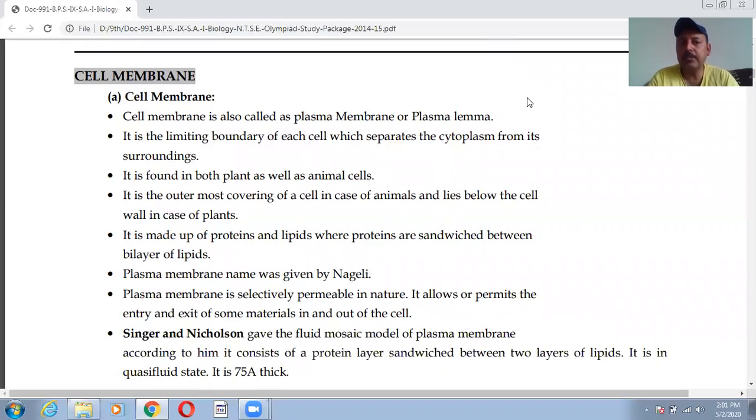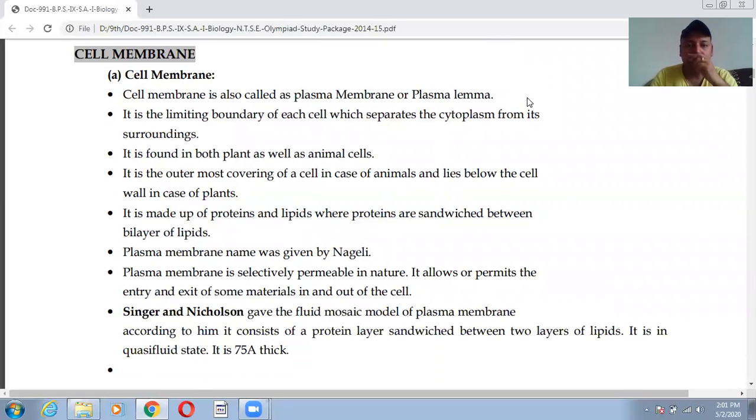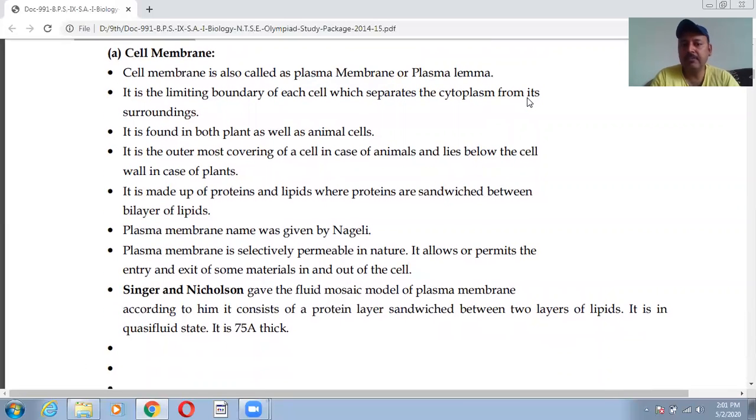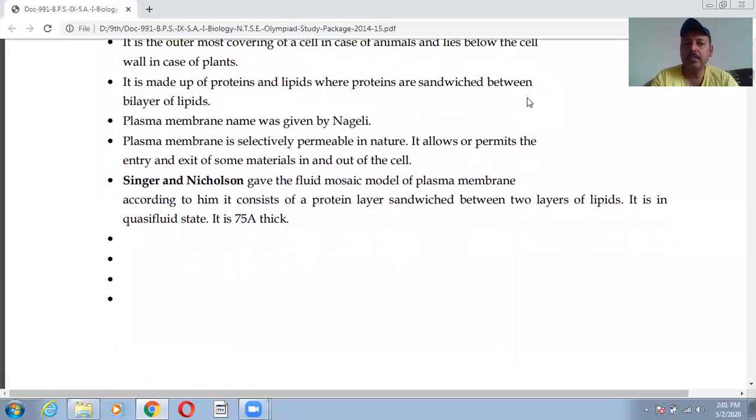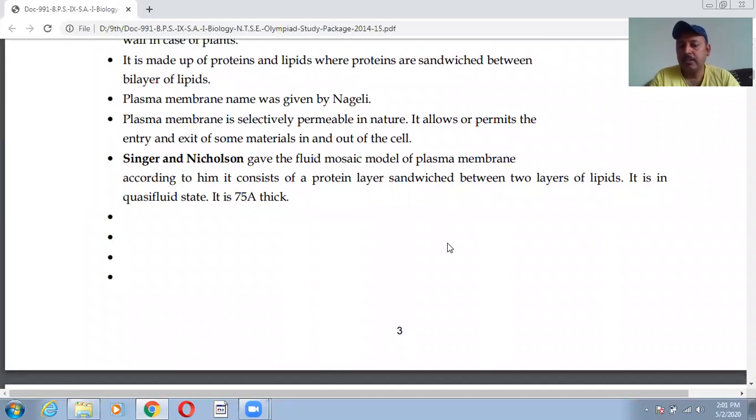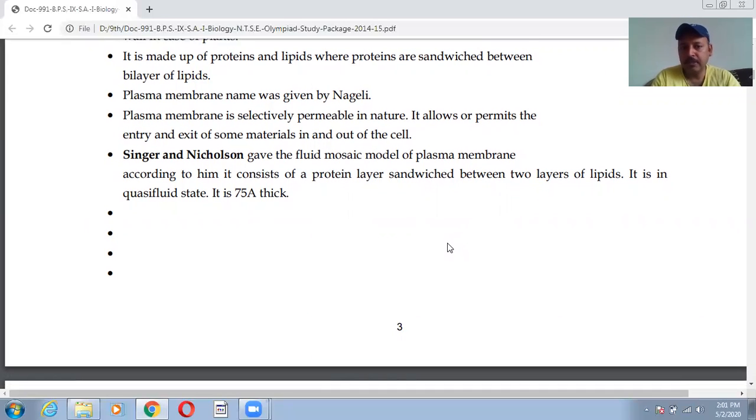It is the outermost covering of cell in case of animals and lies below the cell wall in case of plants. In animals it is the outermost covering whereas in plants it is present below the cell wall because cell wall is not present in animals. Animal cells does not contain cell wall and it is made up of proteins and lipids. Plasma membrane name was given by Nageli. It is selectively permeable in nature because it allows or permits only the selected material to move in and out of the cell. Singer and Nicolson gave the fluid mosaic model of plasma membrane which I am sharing with you.